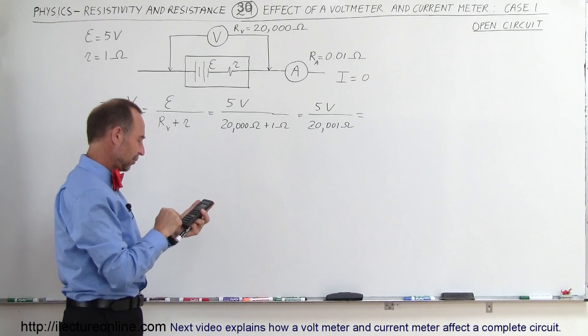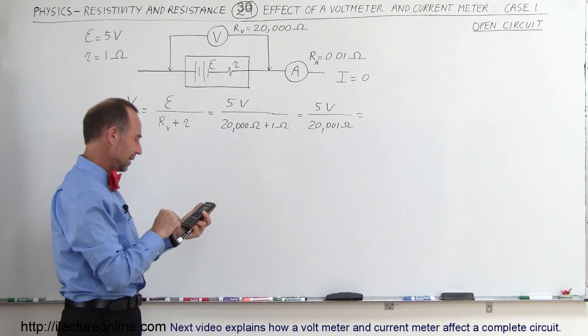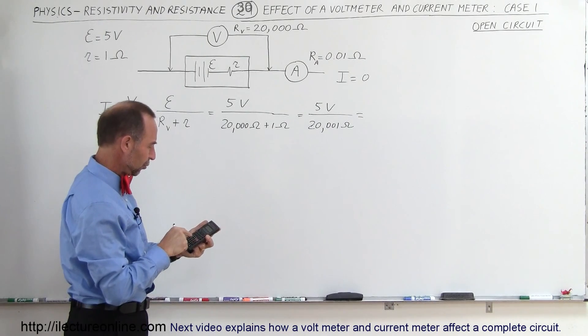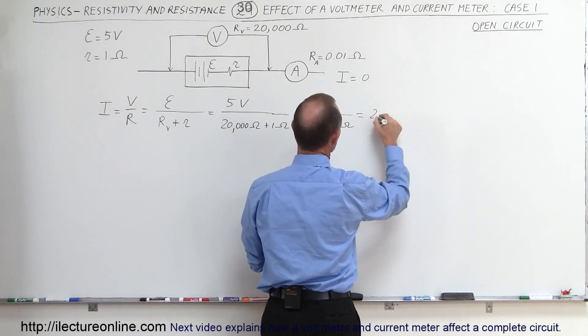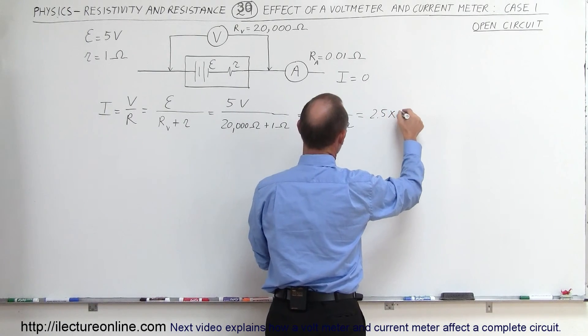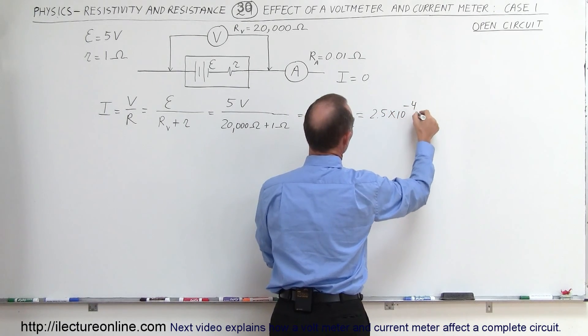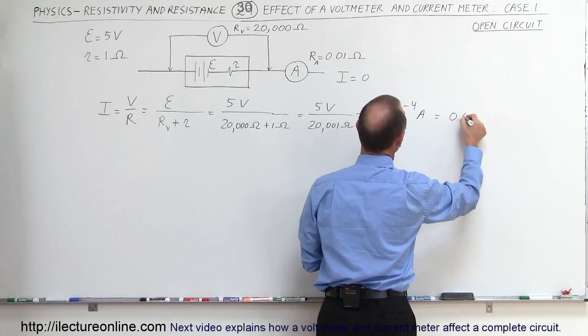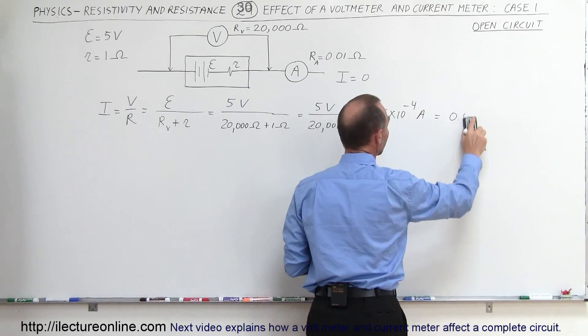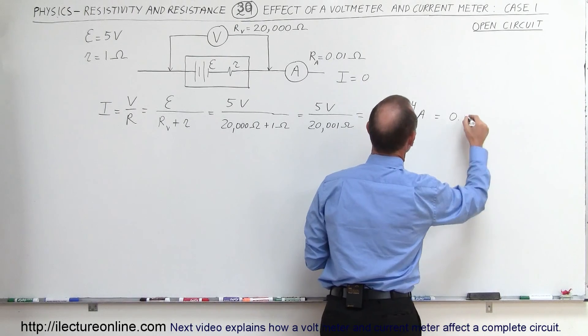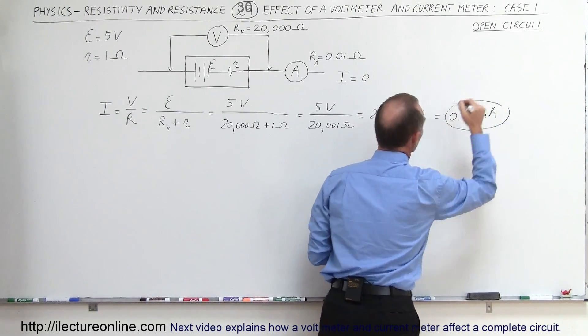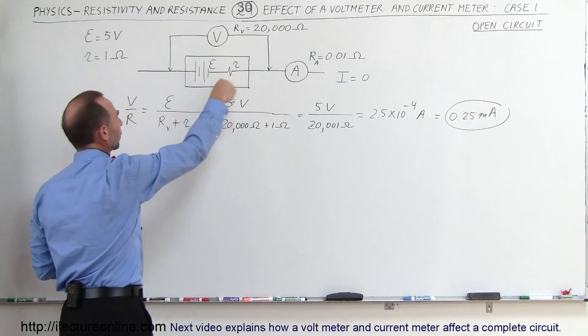So 5 divided by 20,001 ohm equals 2.5. In essence, it will be 2.5 times 10 to the minus 4 amps. And of course, that would be equal to 0.25 milliamps. So that is the current in this part of the circuit.